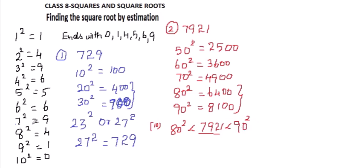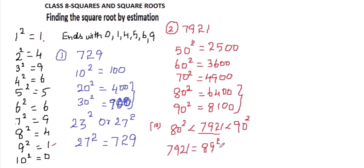That means 7921 lies between 80 square and 90 square. Now with the help of the ending digit table: this number ends with 1, so it must be either 81 or 89. It cannot be 81 because that comes very close to 6400, so we can say that this must be the square of 89. So 89 square is 7921, meaning the square root of 7921 is 89.